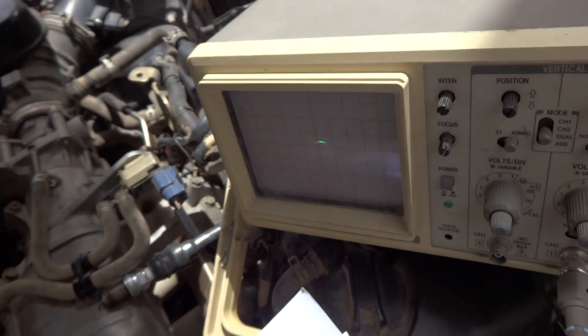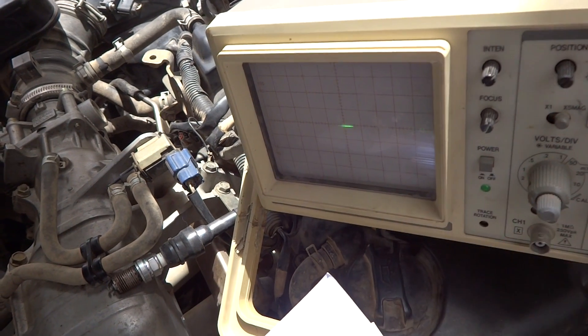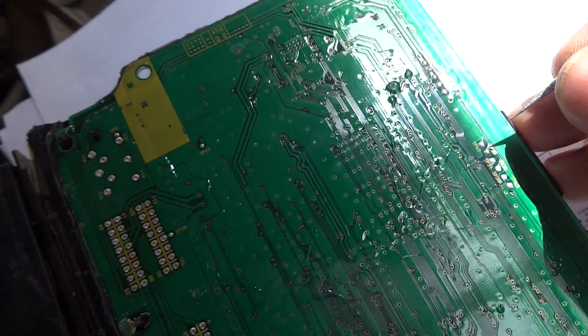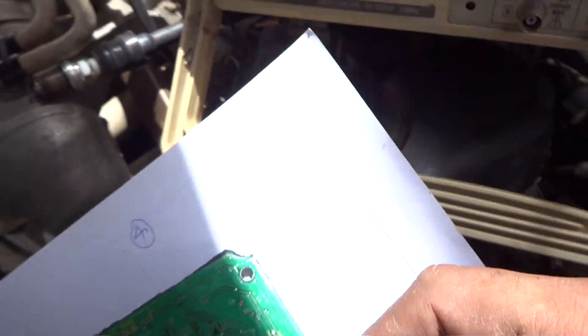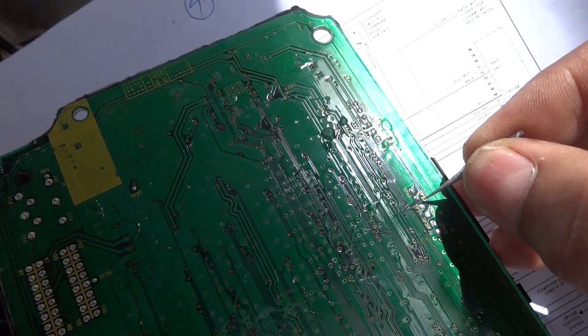This sine wave you can see is from my hand. If I put my hand on the probe I get sine waves. For test point number 42, I'm getting a ground, which is okay.